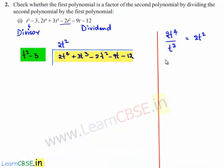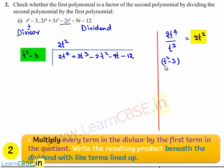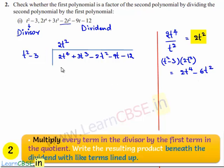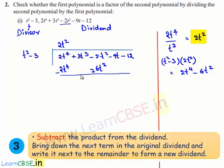The divisor t² minus 3 multiplied by 2t² equals 2t⁴ minus 6t². This product is written here: 2t⁴ minus 6t². On subtracting, 2t⁴ and minus 2t⁴ cancel. We get 3t³ minus 2t² plus 6t², which gives plus 4t².